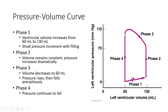That brings us full circle to phase four, where once again there is no change in volume. This is another isovolumetric phase — isovolumetric ventricular relaxation. Volume remains the same but pressure drastically falls as the ventricle relaxes, getting right back down to phase one, where we start the cycle all over again. The pressure-volume loop is an important indicator of the function of the left ventricle.